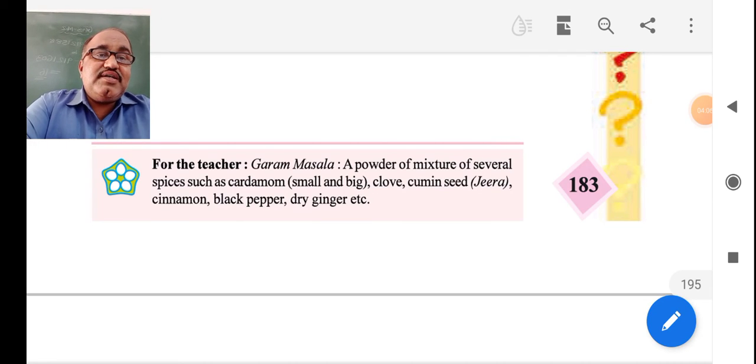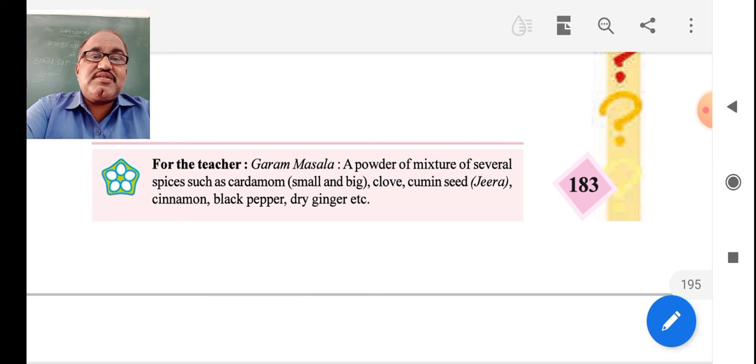Garam masala is a powder of a mixture of several spices such as cardamom, clove, cumin seeds, jeera powder, cinnamon, black pepper, dry ginger, etc.